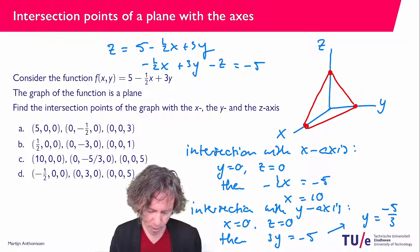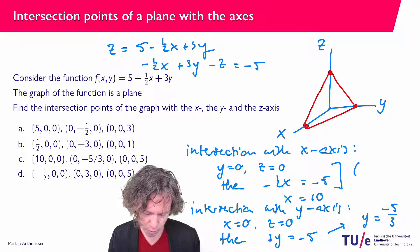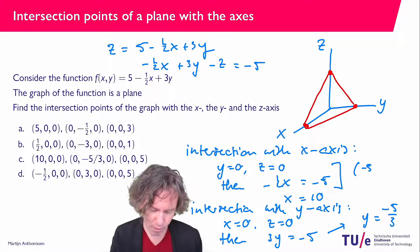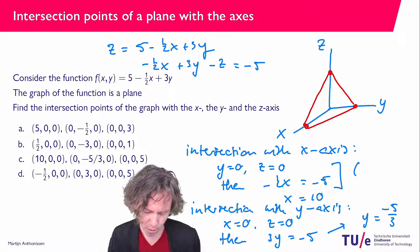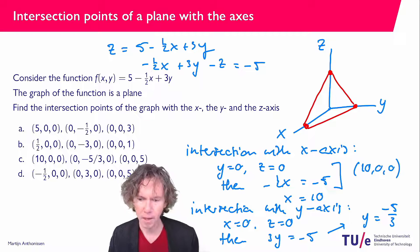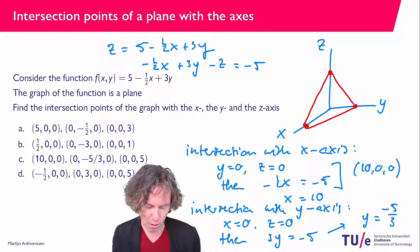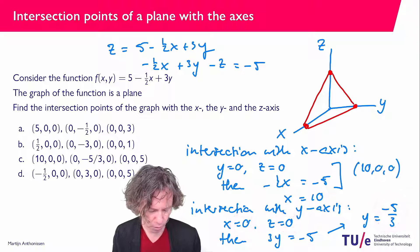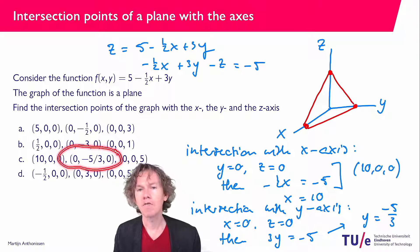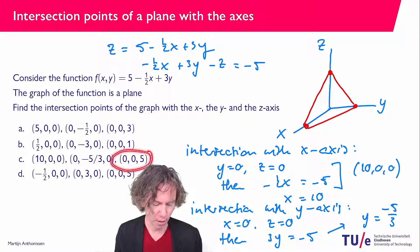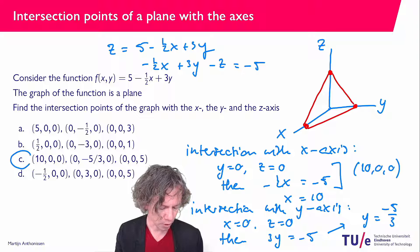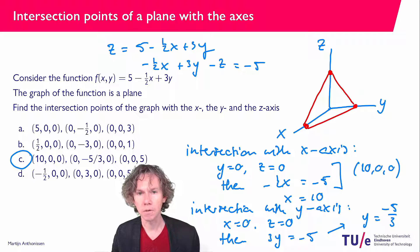To wrap up: the intersection point with the x axis is ten, zero, zero — I was reading a line too high earlier, so that correction gives us ten, zero, zero. The intersection point with the y axis is zero, minus five over three, zero. And the intersection point with the z axis is zero, zero, five. The correct answer to the question is option C. I hope this was clear and I'll see you in the next video.